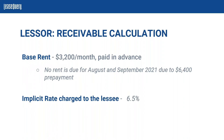We're going to start out by assessing the lease receivable. To calculate the lease receivable, GASB 87 paragraph 44 states that a lessor should initially measure the lease receivable at the present value of lease payments expected to be received during the lease term, reduced by any provisions or estimated uncollectible amounts. Based on that definition, this should sound very similar to what we've learned with the lease liability.